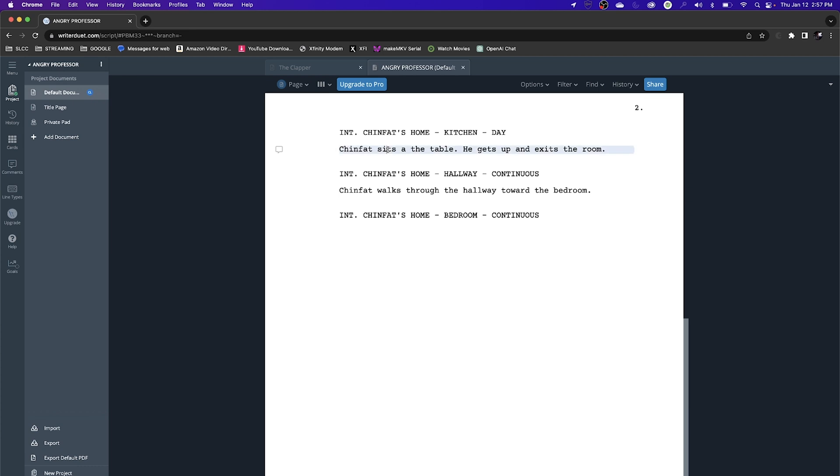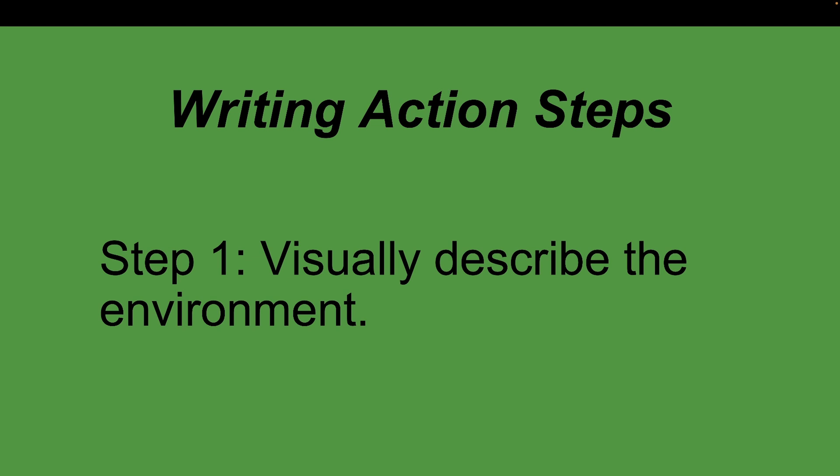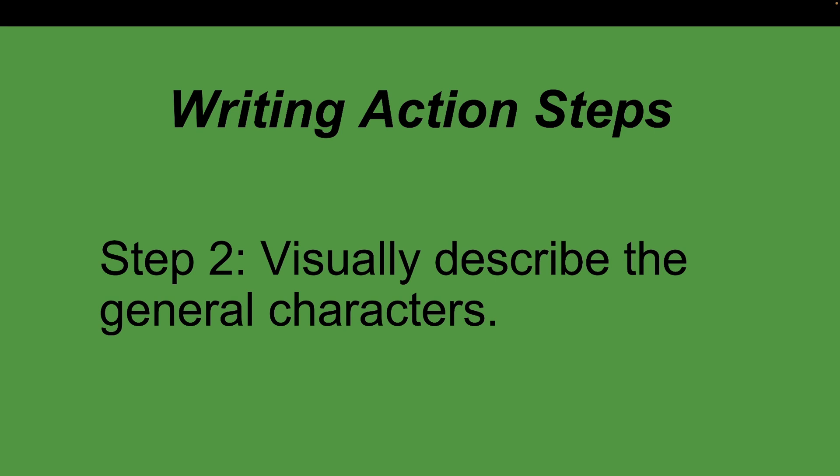Now let's talk about writing an actual scene — specifically action and description. Let me open a PowerPoint covering some general rules for writing action or description. Step one: visually describe the environment if it hasn't been introduced in the screenplay yet. If it's a new location, describe what it looks like visually. Step two: visually describe the general characters — if you're in a classroom with several people, give a general description of who they are.